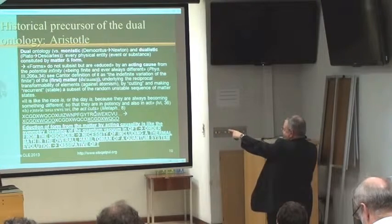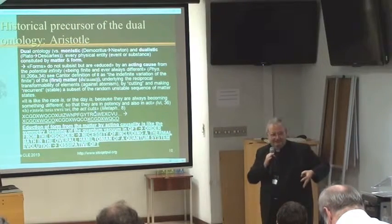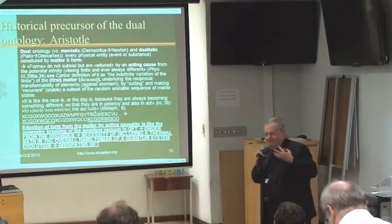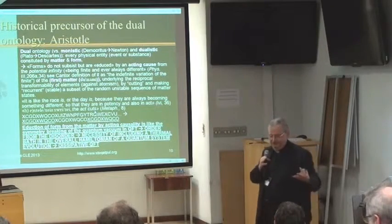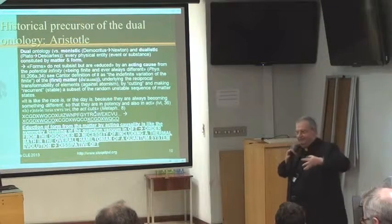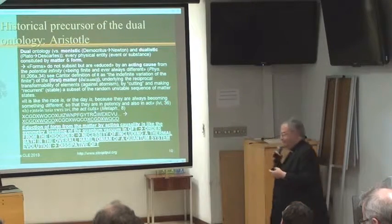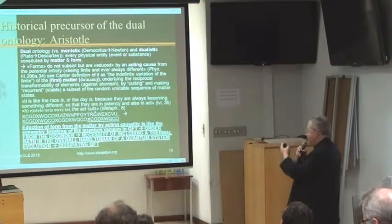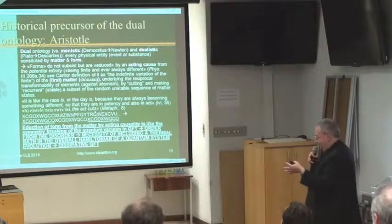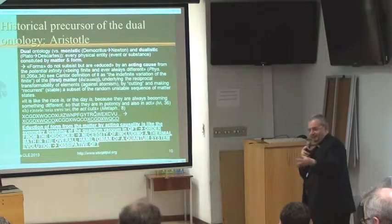This is a simple explanation: the first sequence is casual, and then if I cut and make recurrent, I extract a form from the matter. And of course matter is in potency to infinite forms. This is the action of the heavenly bodies ordering the dynamics of the elements on the earth, according to the ancient cosmology of Aristotle. But what is important here is the ontological notion: the induction of form from matter — not deduction, because there is no law. It is impossible to have a law on this. The induction of form from matter by enacting causality is like the symmetry breaking of the quantum vacuum in quantum field theory.